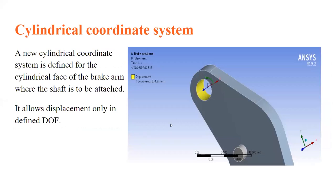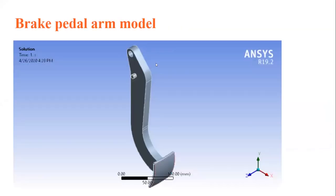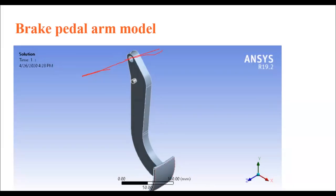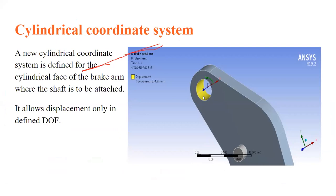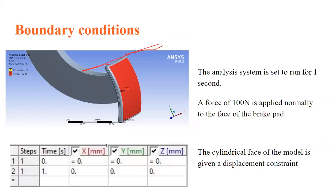For the boundary conditions: this is the brake pedal arm, and this region is where the shaft is to be attached. A cylindrical coordinate system is introduced at this cylindrical face. It allows displacement only in the X, Y, and Z directions, where X and Z are used for translational displacement and Y is used for rotational displacement.